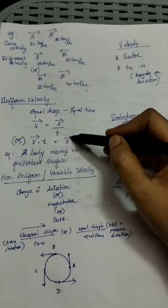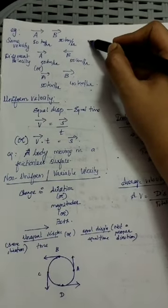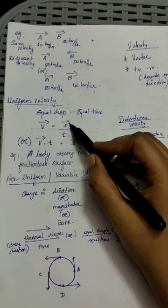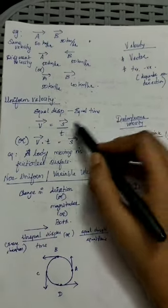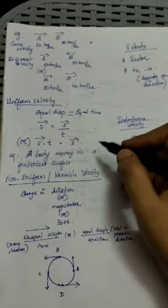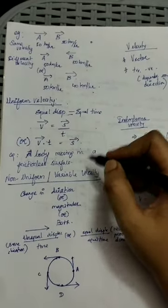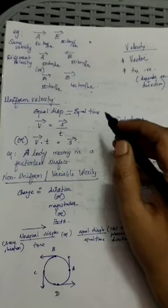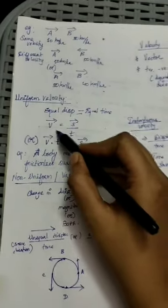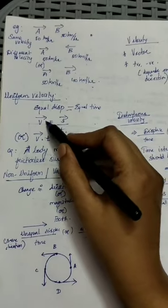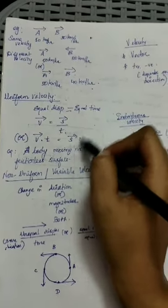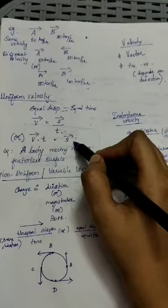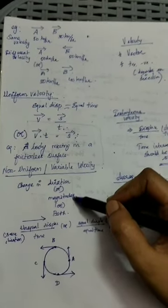Uniform velocity means covering equal displacement in equal intervals of time. Whenever a body moves on a frictionless surface, it gives uniform velocity. From the formula — velocity equals displacement divided by time — cross-multiplying gives the displacement equation: displacement equals velocity multiplied by time. Use this formula when you need to find displacement given velocity and time.